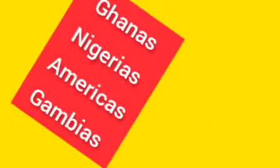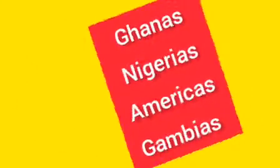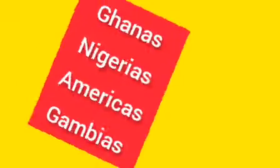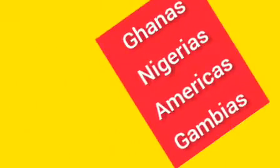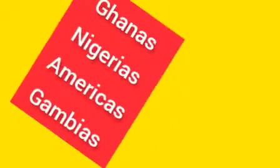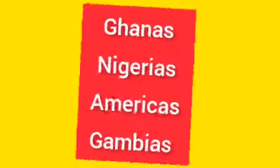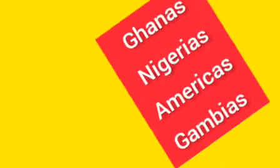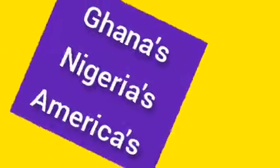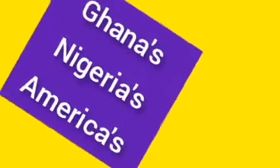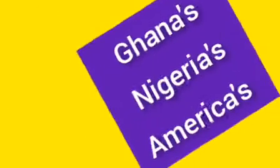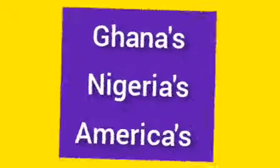Example 2: There is nothing like 'Ghanas,' 'Nigerias,' 'Americas,' or 'Gambias.' All those are specific names given to particular countries and therefore they have no plural form. You can only use an apostrophe-s with a proper noun to indicate possession, but not to make a plural form of it.